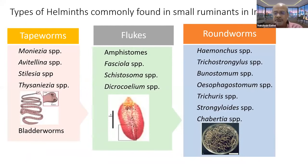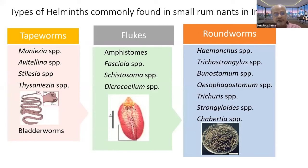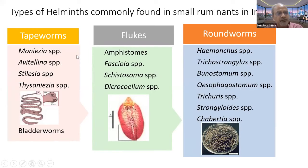Let me go through the helminths which are commonly encountered in different parts of India. There are a few helminths like Dicrocoelium dendriticum showing a patchy or regional distribution which I have not considered. I have considered the pan-India scene and the parasites which are commonly confronted. That list is displayed on your screen.